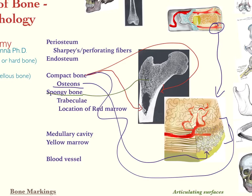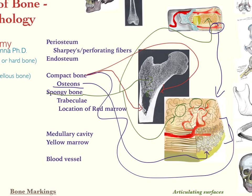Spongy bone, in contrast, is the trabecular bone. It looks like honeycomb — very open, with almost air cavities in dried bone. The individual components of that matrix are known as trabeculae. The trabeculae actually serve as a scaffolding for the location of red marrow, so some of the hematopoietic component of the body is located there.